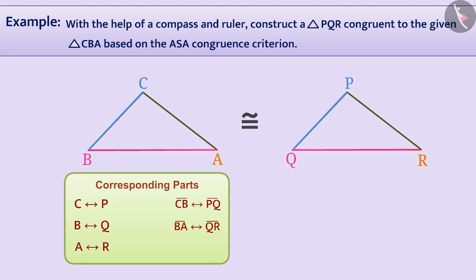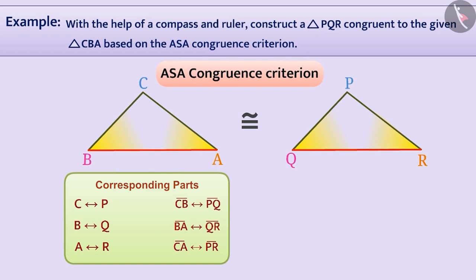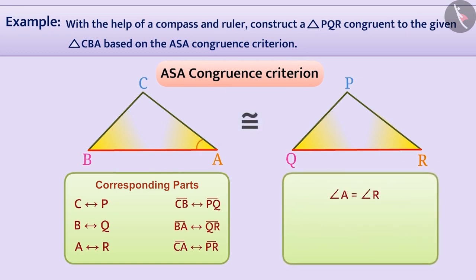BA corresponds to QR and CA corresponds to PR. As we know, if two angles and the included side of a triangle are equal to two corresponding angles and the included side of another triangle, then the triangles are congruent under the ASA congruence criteria. Here, we will draw angle A equal to angle R, angle B equal to angle Q, and side BA equal to side QR, which will give us triangle PQR congruent to triangle CBA.